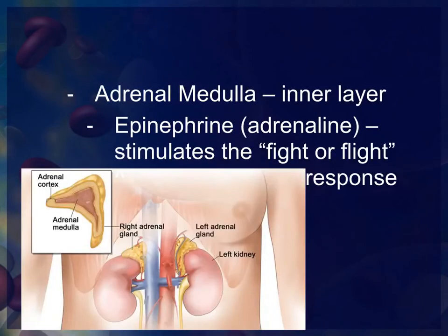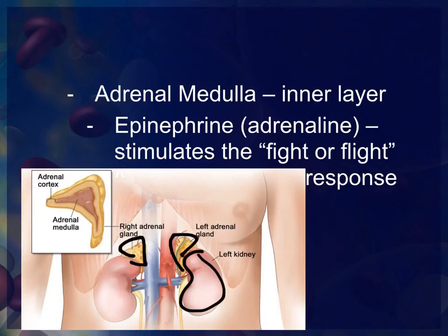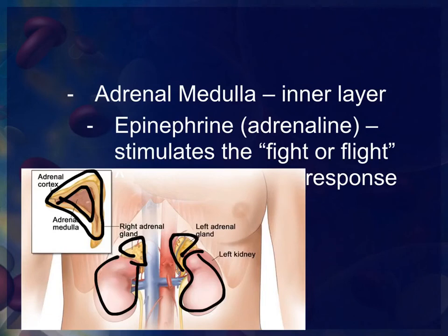The middle portion of the adrenal gland is called the adrenal medulla. It produces epinephrine, or adrenaline, and stimulates the fight-or-flight response of the sympathetic division of the autonomic nervous system. The adrenal gland sits as a small yellow structure on top of the kidneys — the adrenal cortex is the yellow outer area, and the adrenal medulla is the brown part in the middle.